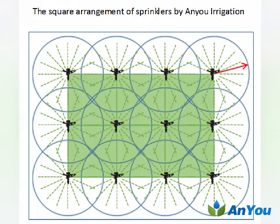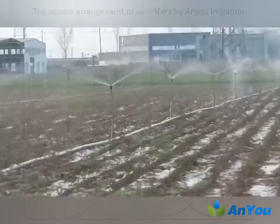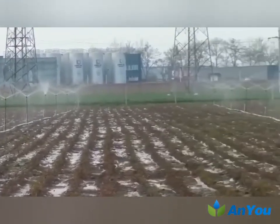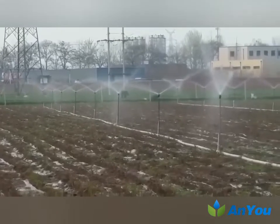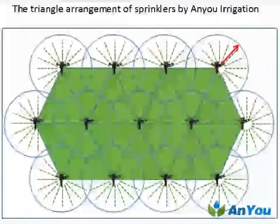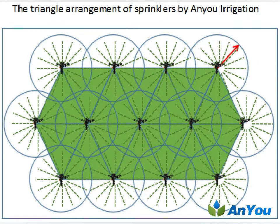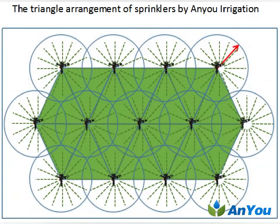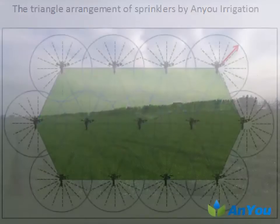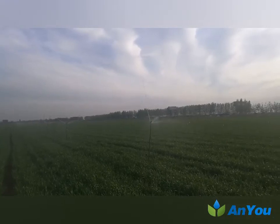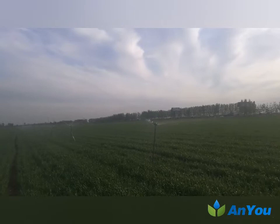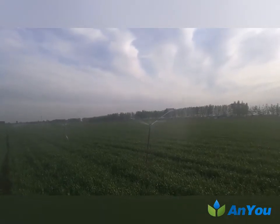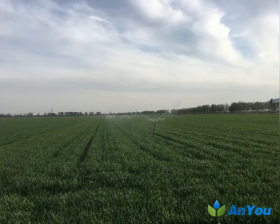When NU Irrigation makes a square arrangement, the distance between the sprinklers and the branch pipes is equal, but the distance between sprinklers is 1.41 times that between branch pipes. Considering the influence of wind, the recommended distance between sprinklers is 0.9 to 1.1 times the range of the sprinklers. For a regular triangle arrangement, the distance between sprinklers is equal, but the distance between branches is 0.866 times the distance between sprinklers, and the recommended spacing is 1.0 to 1.2 times the range of the sprinklers.